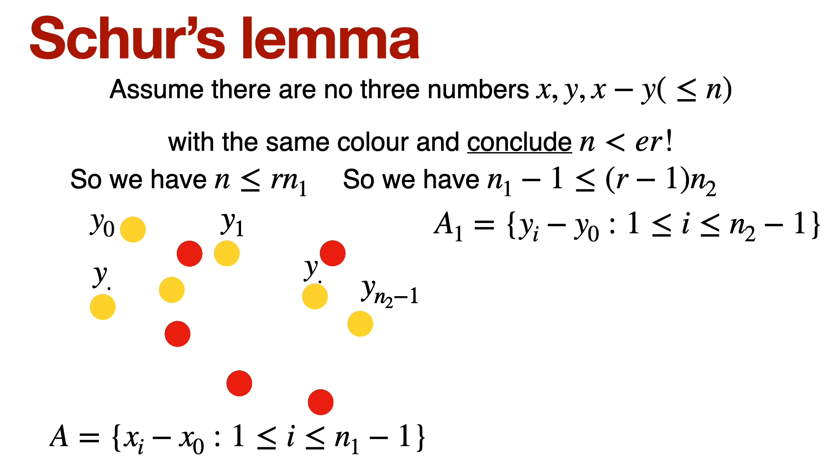All right, so now we are back to the same trick. Again, we are going to look at all the differences, yi minus y0, okay? So A1 is a new set created similar as A, where we look at all the differences. Notice y0 is the least element, so therefore yi minus y0 is positive. And all the elements of yis are less than n, so yi minus y0 is less than or equal to n. So we have A1, a set. And now we can ask, can any of these elements be colored yellow? Well, of course not. It's the same logic. If yi minus y0 is colored yellow, yi and y0 are already colored yellow, we are again going to contradict our assumption.